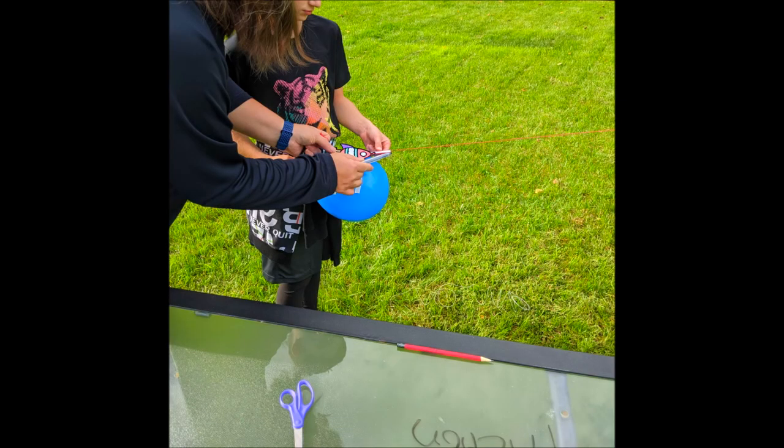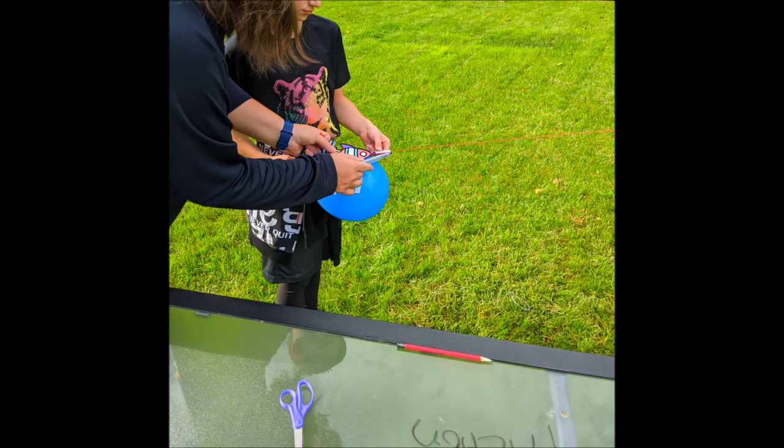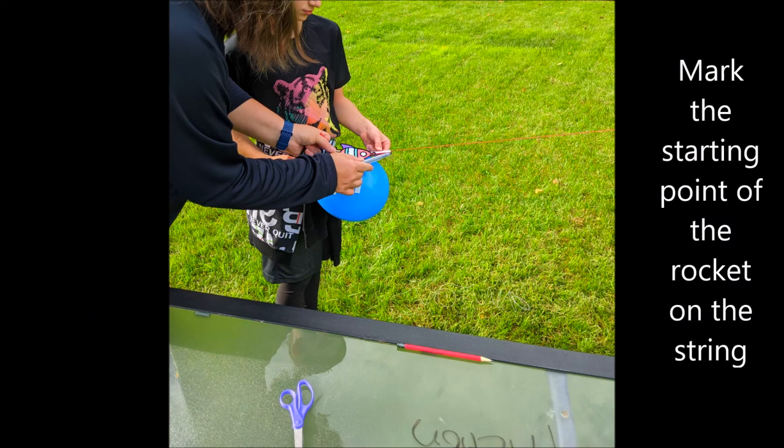While still holding the balloon closed, either tie the string to a chair or have your helper take the string a good distance away from the rocket. Make sure the string is still running through the straw out of the front end of the rocket. Now hold on to the end of the string closest to your rocket and pull it tight between the two of you. Mark the string so you know where your rocket started.